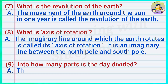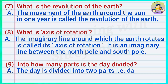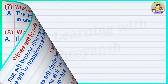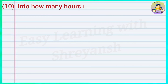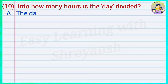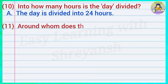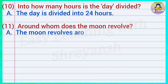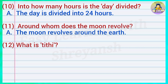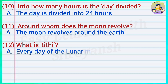Nine: Into how many parts is the day divided? Answer: The day is divided into two parts — day and night. Ten: Into how many hours is the day divided? Answer: The day is divided into 24 hours. Eleven: Around whom does the moon revolve? Answer: The moon revolves around the earth. Twelve: What is tithi? Answer: Every day of the lunar month is called tithi.